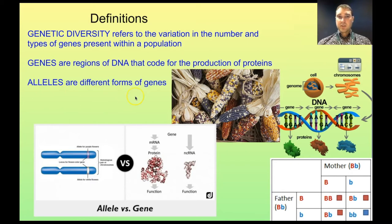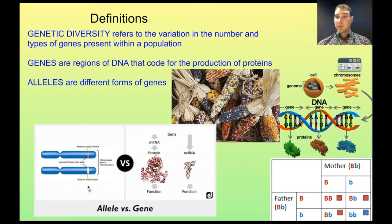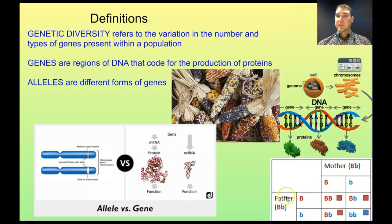Alleles are different forms of genes. In corn, different alleles are active and that leads to the different colours of the kernels. For example with flower colour, we have an allele for purple flowers and an allele for white flowers. Out of those two alleles, the purple flowers will express over the white flowers. You would have looked at different alleles in year 10 genetics, examining things like eye colour with dominant or recessive alleles — they're different forms of the gene.